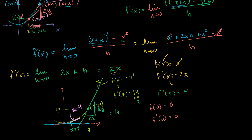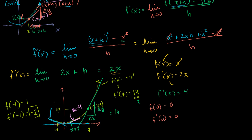Let's try the point x equals negative 1. So f of negative 1 — you just square it — is equal to 1. What is f prime of negative 1? f prime of negative 1 is 2 times negative 1, which equals negative 2. It means the slope of the tangent line at x equals negative 1 is negative 2. So if I draw the tangent line there, it is a downward sloping line — which makes sense. The slope here is equal to negative 2.